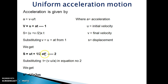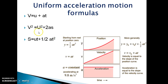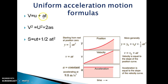Again, substituting v = u + at from equation number 1 into equation number 2, we get v² = u² + 2as. So we get three equations of uniform acceleration motion: v = u + at, v² = u² + 2as, and s = ut + ½at². Where v is the final velocity and u is the initial velocity.